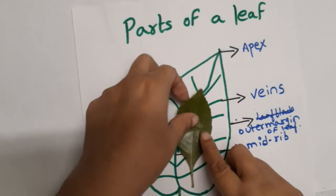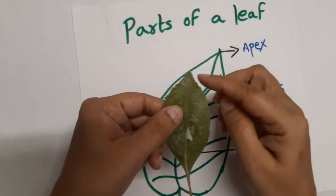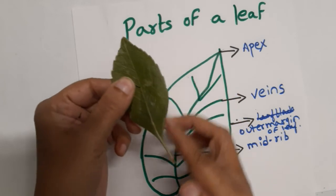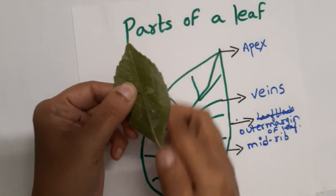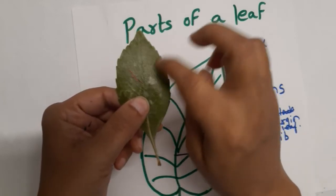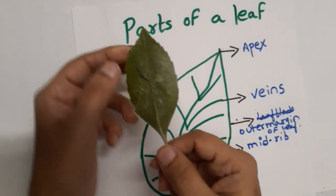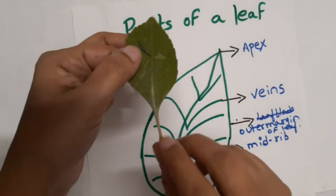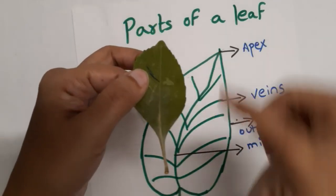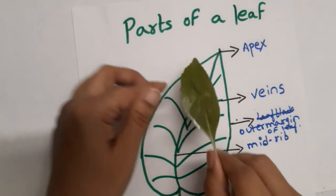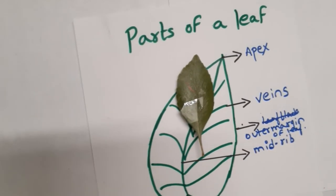So as I said, this is the apex, and this is the outer edge, the outer margin of the leaf. These lines are the veins, and the middle line in particular is the mid-rib. This is how you should explain to the kids. It will be very easy for them.